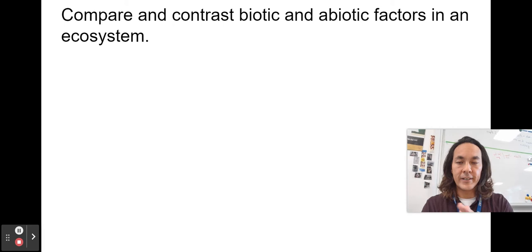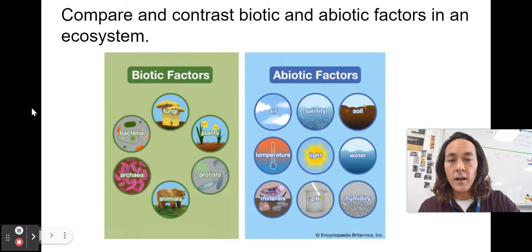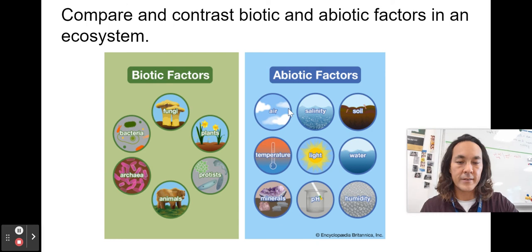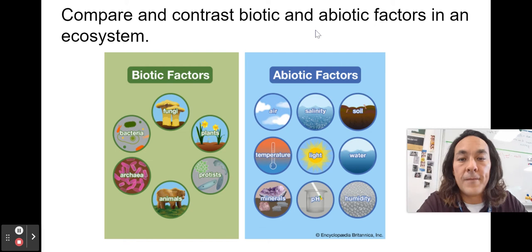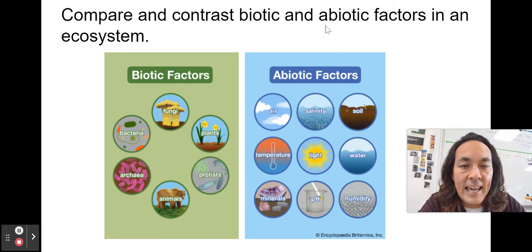We had a big vocab list that we developed each day in class. Vocab is important, but what's more important is using it to construct an argument from evidence. Biotic factors are those that are alive; abiotic factors are those that are not. There's an interplay between them — abiotic factors support life, and biotic factors help cycle nutrients back to abiotic factors. Bio means life; the prefix 'a' means without, like asexual means to reproduce without sex — so abiotic means without life.